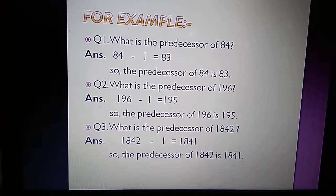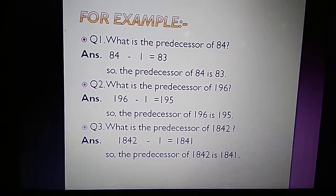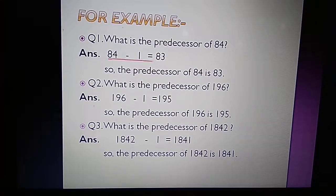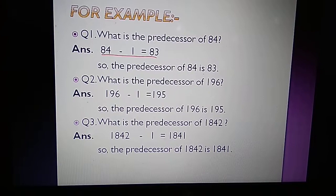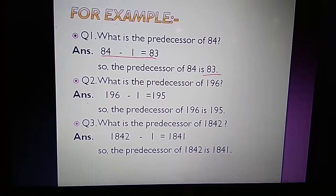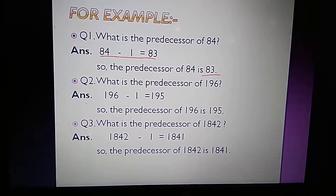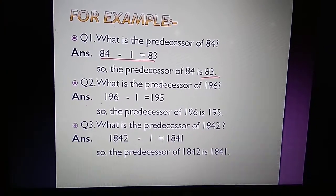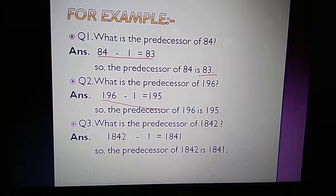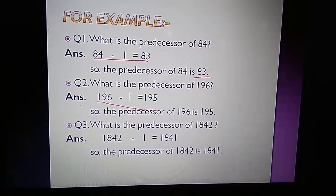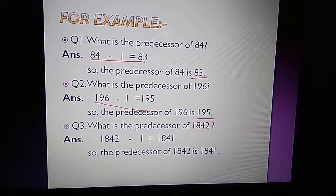Let us take some examples. Question 1: what is the predecessor of 84? When we subtract 1 from 84, we get 83. So the predecessor of 84 is 83. Question 2: what is the predecessor of 162? When we subtract 1 from 162, we get 161. So the predecessor of 162 is 161.